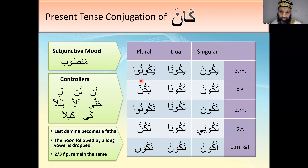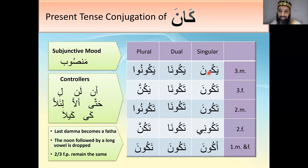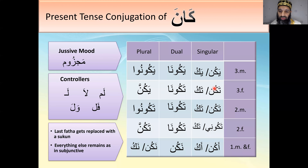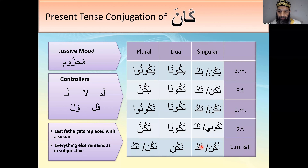For majzoom, we normally put a sukoon on the last letter. But with this irregular verb kana we get a problem: you can't have a noon with sukoon next to a waw with sukoon — two sukoons can't come together in Arabic. So something has to give: the waw drops, giving you yakun, takun, takuni, akun, nakun. For short, yakun can be written yaku, and aku comes in the Quran.